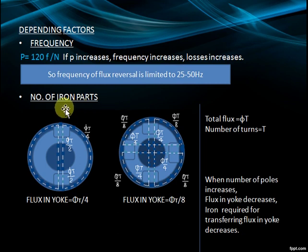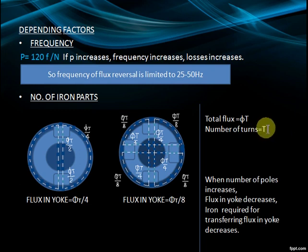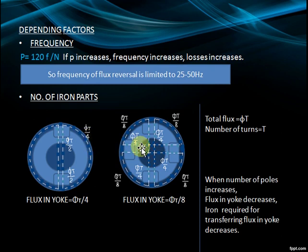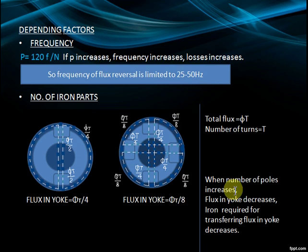Number of Iron Parts: Let total flux equal Phi_T and number of turns equal T. In a 2-pole machine, flux under one pole is Phi_T/2 and flux under the yoke is Phi_T/4. In a 4-pole machine, flux under one pole is Phi_T/4 and under the yoke is Phi_T/8. When number of poles increases, flux under the yoke decreases and iron required for transferring flux in the yoke decreases.